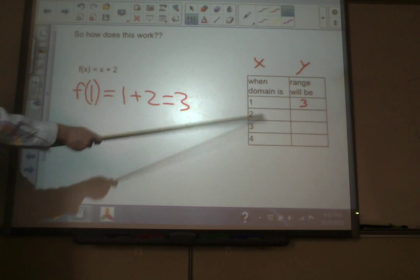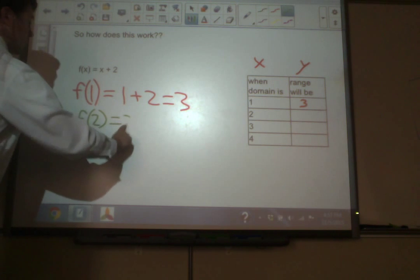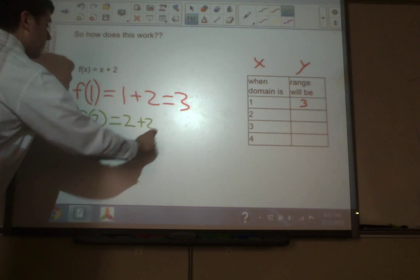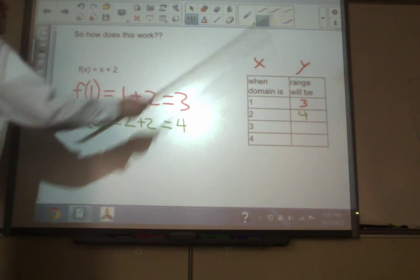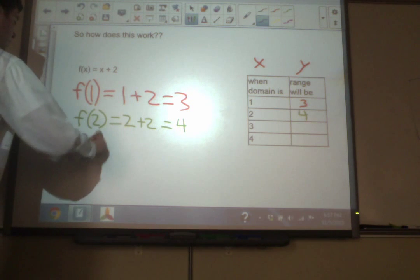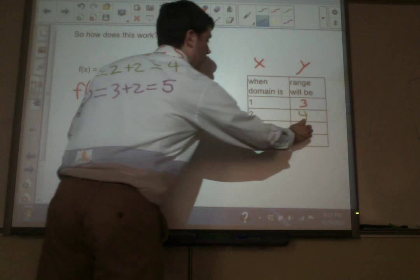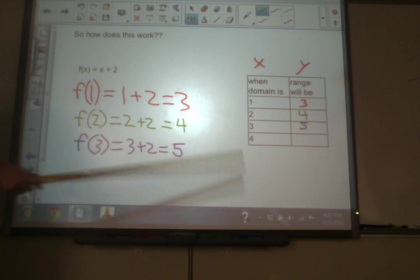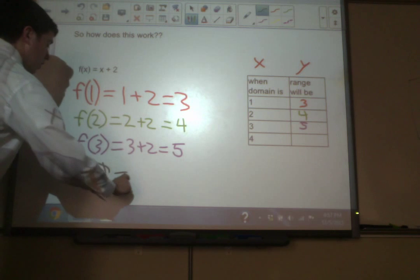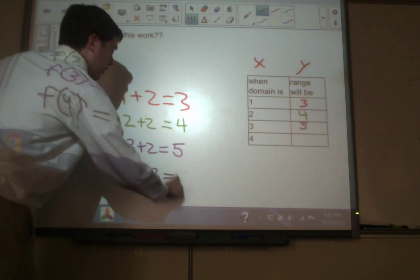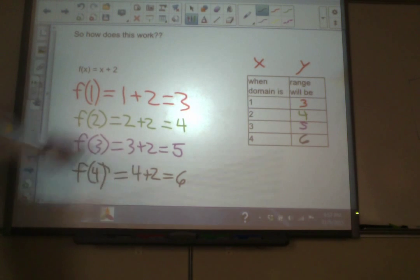What about when we put 2 into the function? This time we're putting in 2. What do we get on the other side? Instead of x, it's 2. Plus 2 stays the same. And we get 2 plus 2 equals 4. So, when the domain is 2, the range is 4. Hopefully, you're starting to see a pattern here. When we put 3 into this particular function, we're going to get 3 plus 2, which equals 5. And when we put 4 in, function of 4 equals 4 plus 2, which ultimately equals 6. So, when domain is 4, range is 6. And there we go. We just completed that chart.